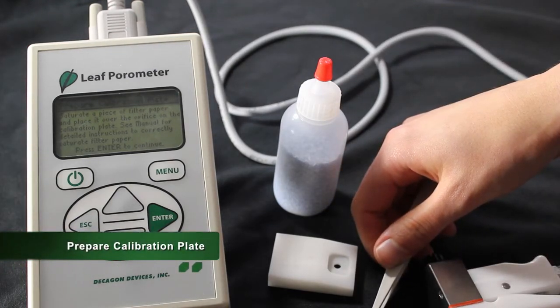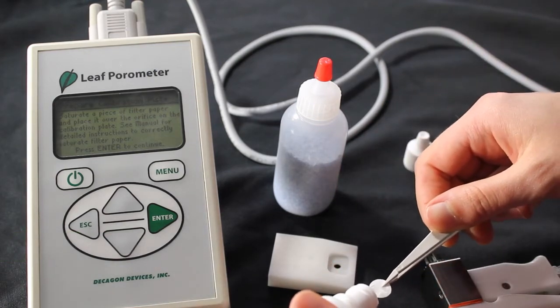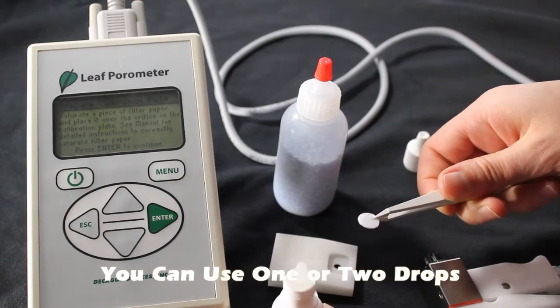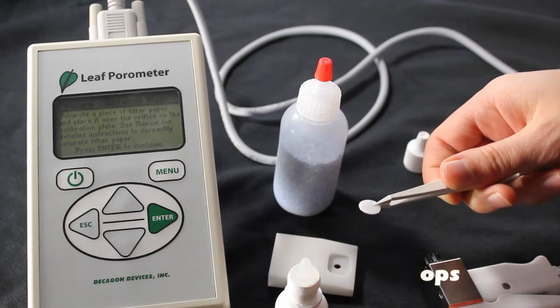The next step is to saturate a piece of filter paper included in your kit. Use tweezers to pick up a disk of filter paper and then add one drop of deionized water to saturate it. Allow several seconds for the water to fully saturate the filter paper.